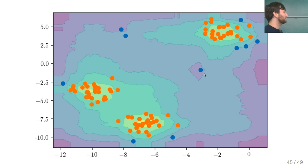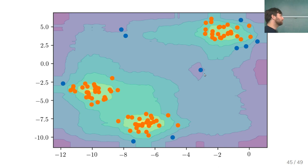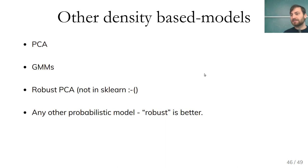There was an outlier detection challenge — I think it was MasterCard — predicting credit card fraud. I just ran mean imputation, one-hot encoding, and this Isolation Forest model without tuning anything, and placed second. To me that means it actually works reasonably well out of the box.